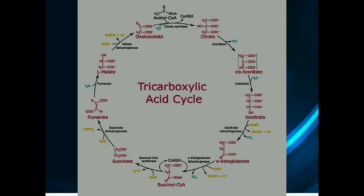Here is the tricarboxylic acid cycle, also called the Krebs cycle or citric acid cycle, in which oxaloacetate is converted into citrate, which is further converted into isocitrate. Isocitrate is converted into alpha-ketoglutarate, which is further converted into succinyl-CoA. Succinyl-CoA is converted into succinate, which is further converted into fumarate, then malate, and finally back into oxaloacetate, which acts as a precursor to restart the cycle. Many enzymes are used, each specific for its own reaction.